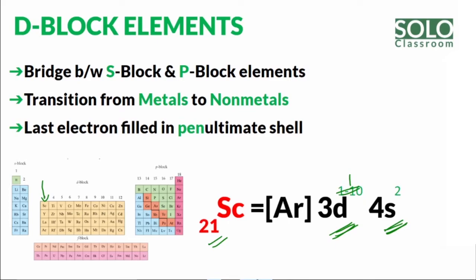Here we go — scandium, titanium, vanadium, chromium, manganese. Electrons are filled into the D subshell. This is called 3D filling. The electron filling in D Block elements occurs in the penultimate shell.